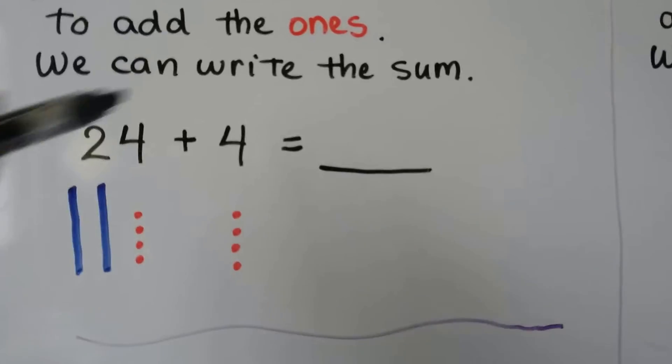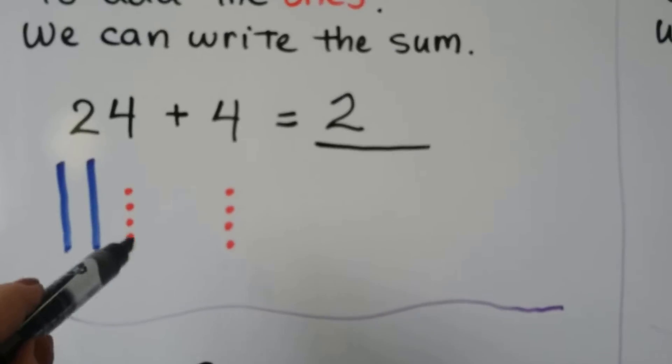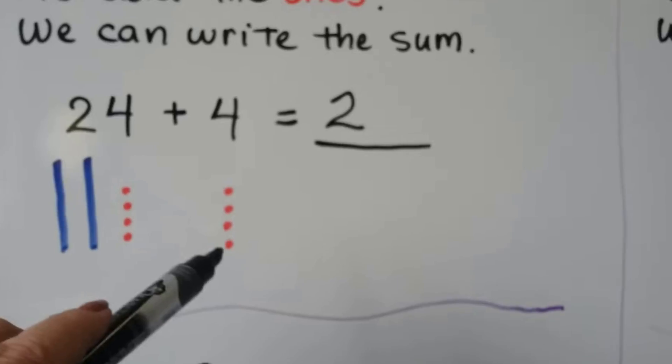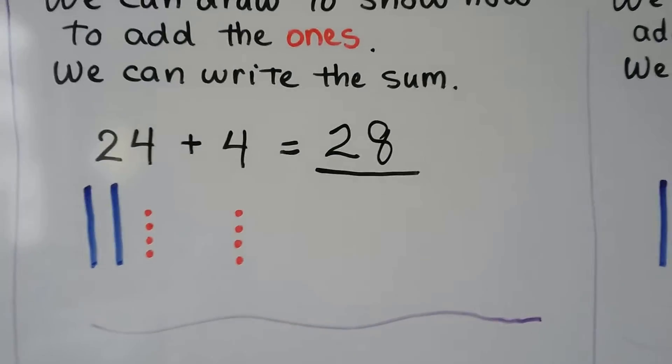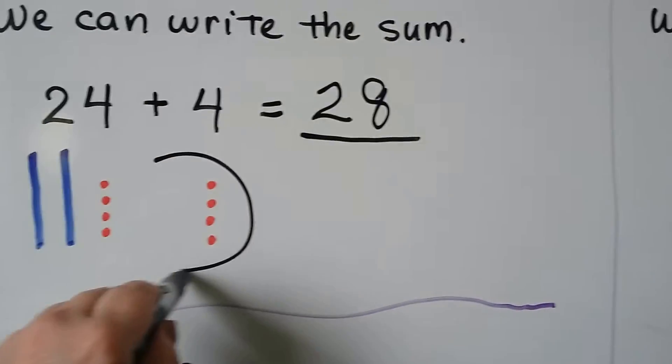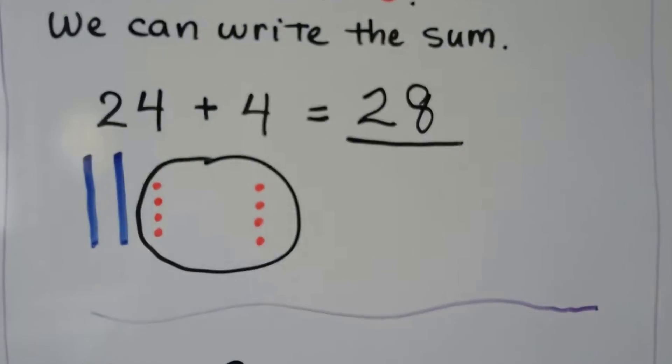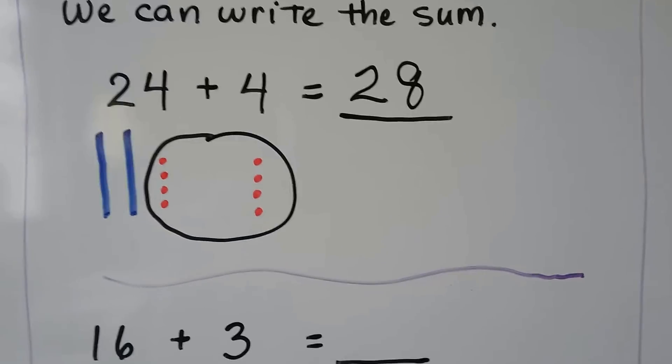We have two 10s, and we have 4, 5, 6, 7, 8 ones. 24 plus 4 is equal to 28. We group the 1s together, and count them all together, and get a total. Two 10s and 8 ones.